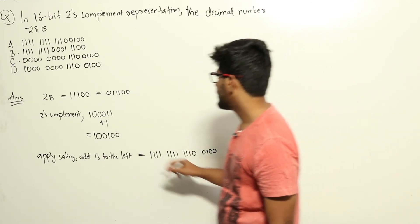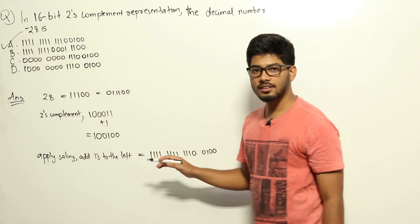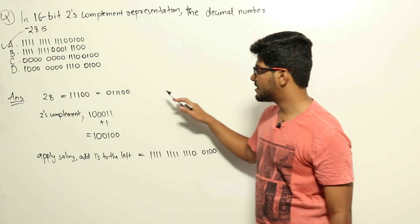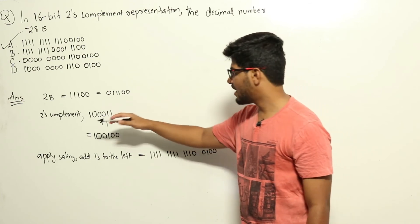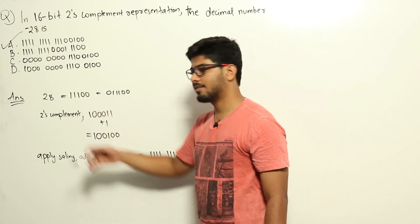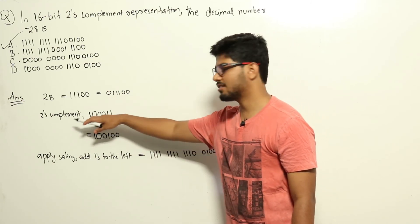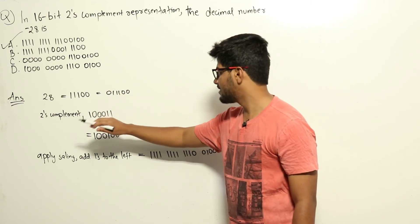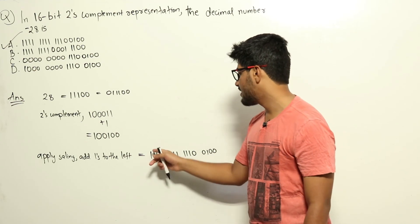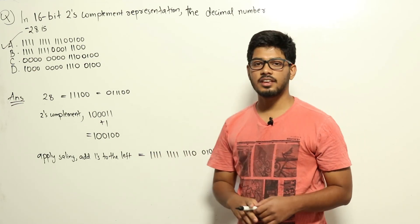Looking at the options, that is option A. Alternatively, you could have represented 28 using 16 bits first and then done the 2's complement operation, but then you would have to write more bits. Here I just did the calculations using 6 bits and added ones at the end, so the answer is option A.